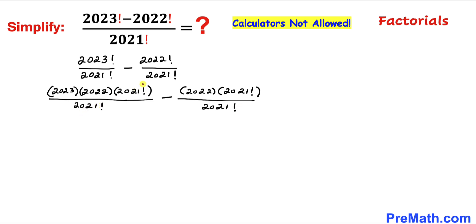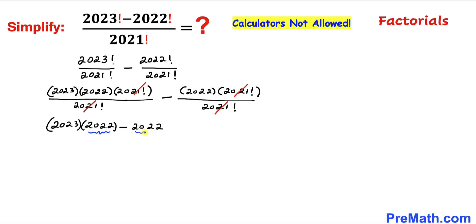Now we can see that 2021 factorial cancels out with 2021 factorial in both terms. We are just left with 2023 times 2022 minus 2022. We can see that 2022 is common in both terms, so we can factor out 2022, giving us 2022 times (2023 minus 1).